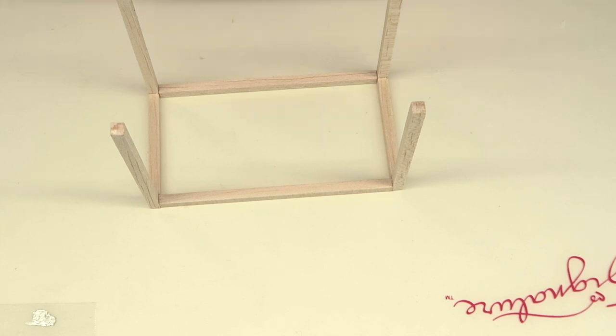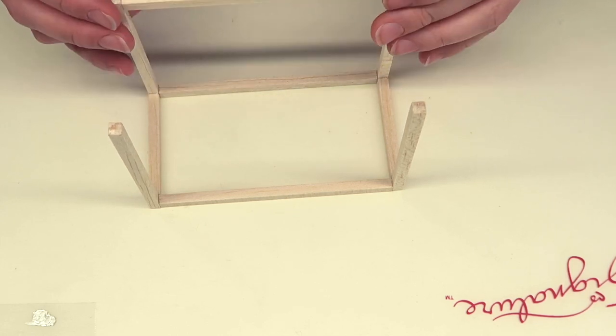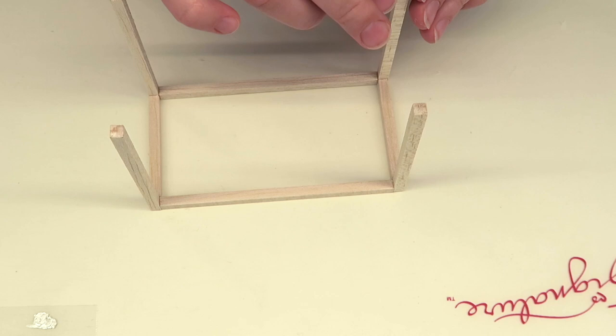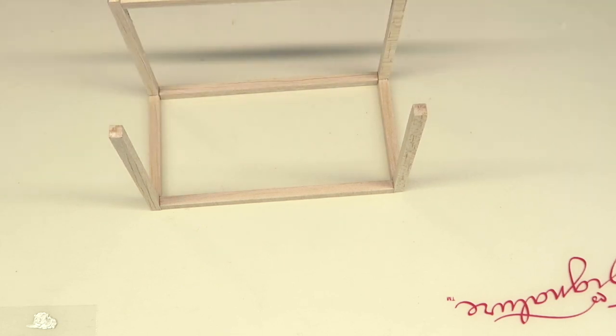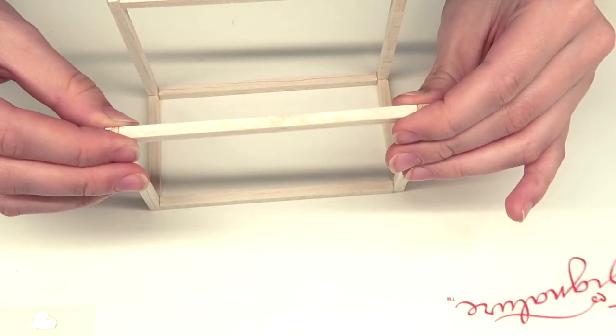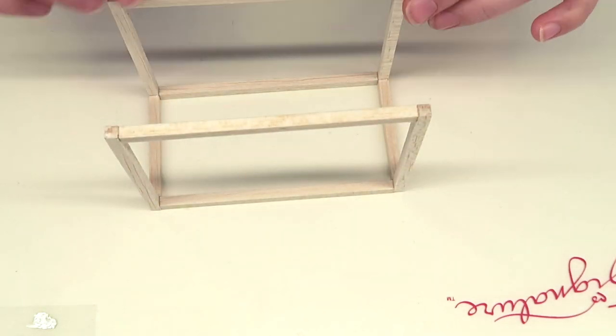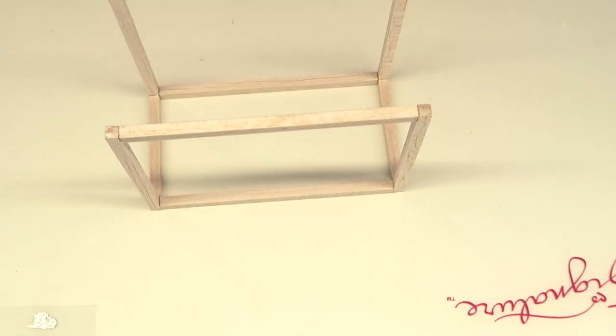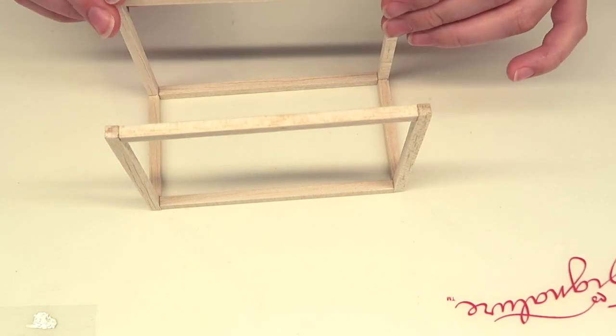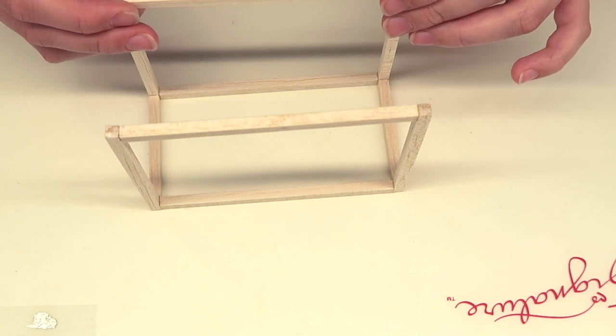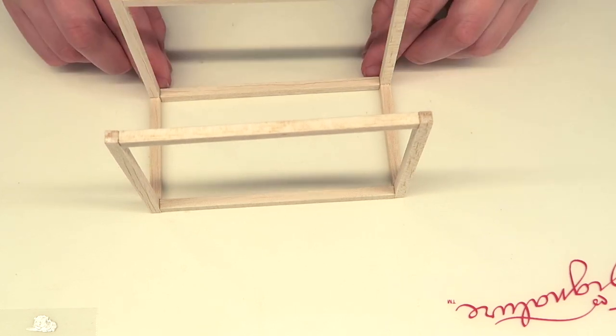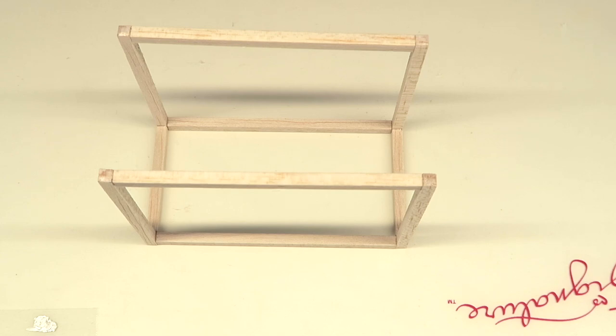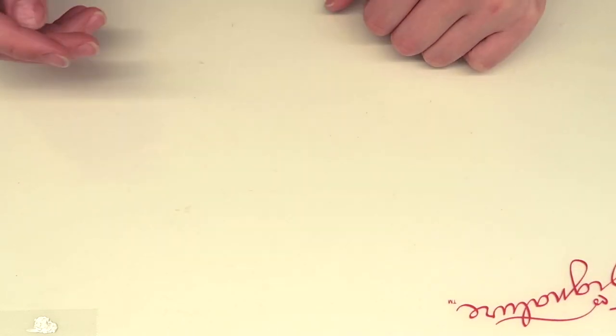Once the bottom is secure, you can start adding the top beams and this will give it some stability. You want to make the bottom as one piece and the roof as another, because that's going to be the easiest way to put this together. Once this is done, just set it to the side and start with the roof.